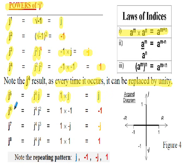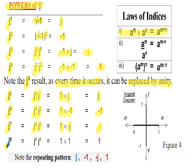j to the 6 can be written as j to the 4 times j squared. j to the 4 is 1, multiplied by j squared which is negative 1, so j to the 6 is negative 1. j to the 7 is j to the 4 times j to the 3: that's 1 times negative j, so j to the 7 is negative j. j to the 8 is j to the 4 times j to the 4, which is 1 times 1 equals 1. So the pattern — j, negative 1, negative j, positive 1 — repeats from here on in.